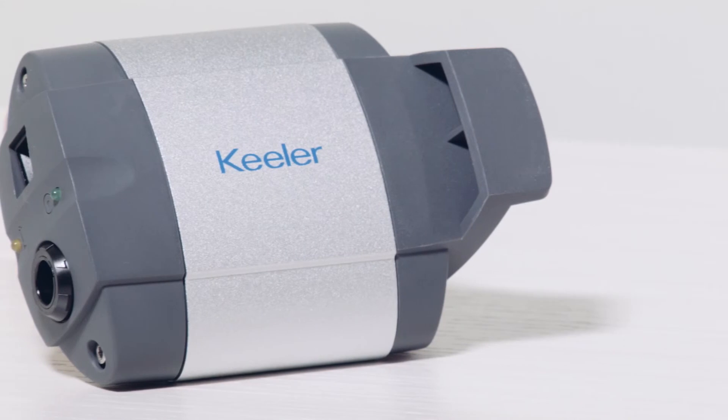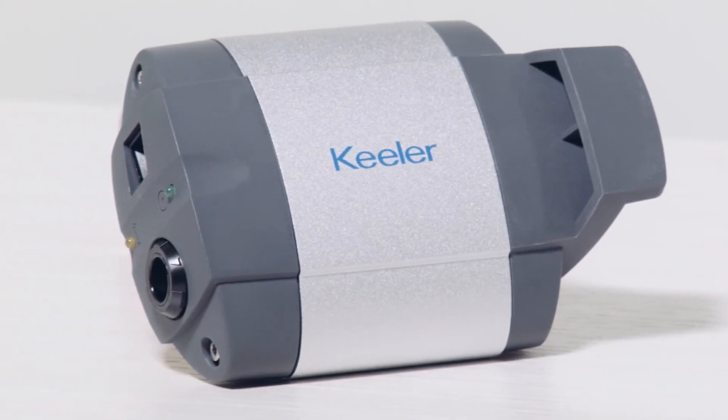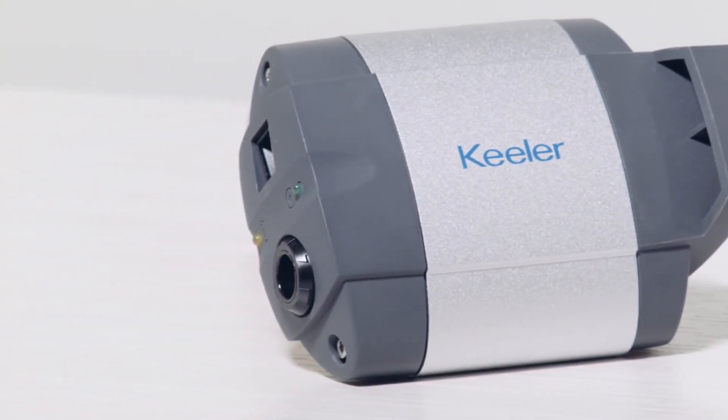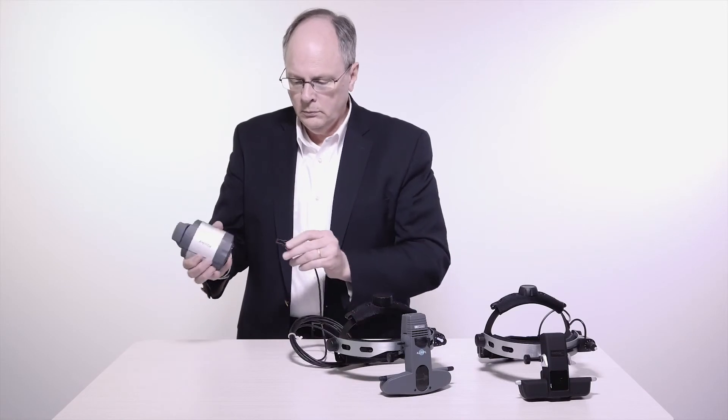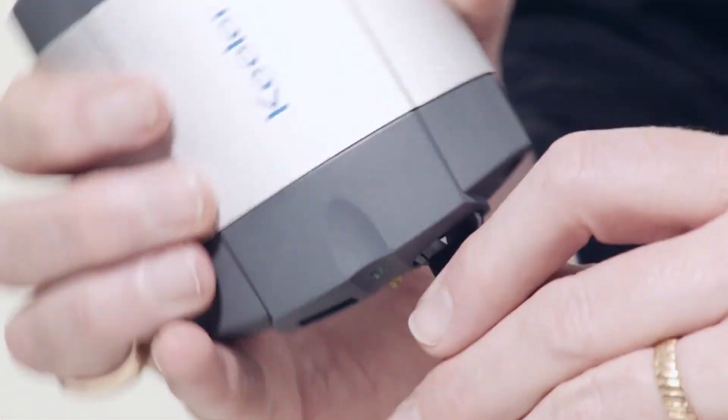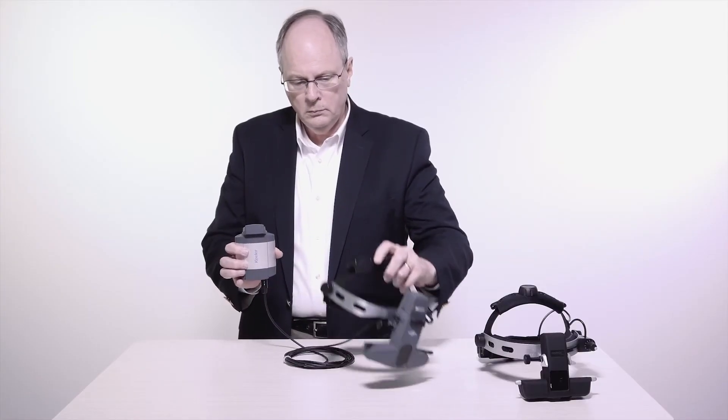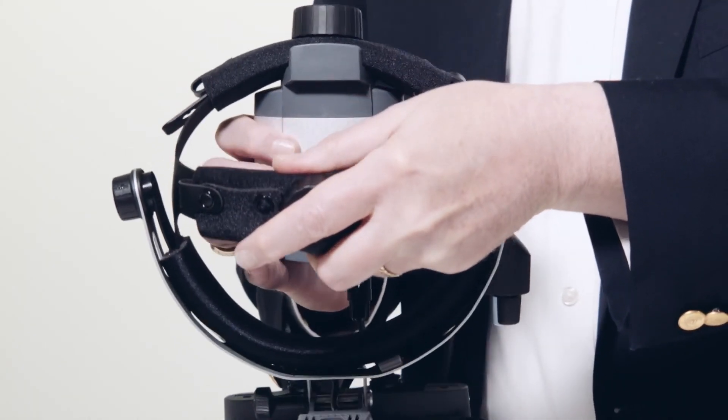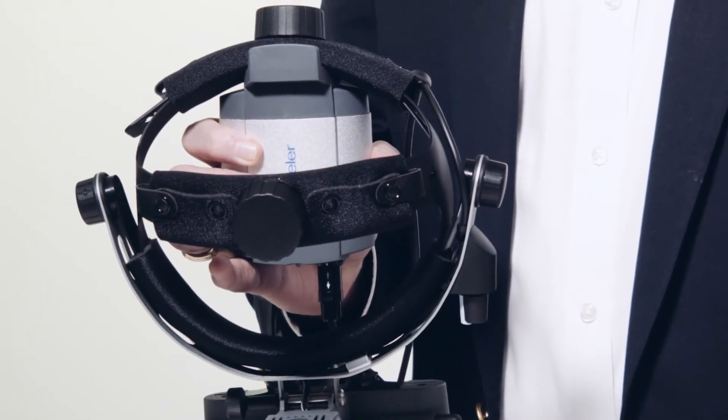All Pupil 2 or Vantage Plus wired units can be powered using the wall-mounted wall pack. This compact control and power system can neatly store and power your indirect. The built-in microswitch conveniently turns off the system when placed into its cradle.